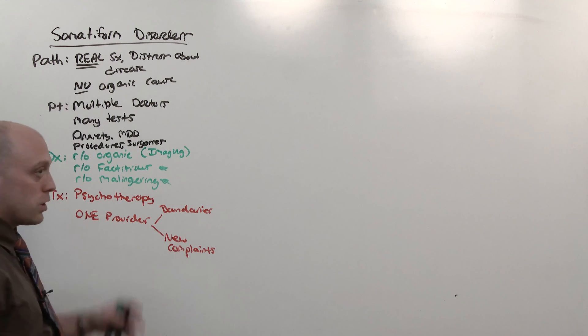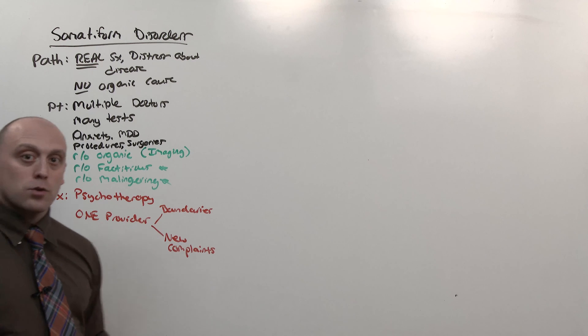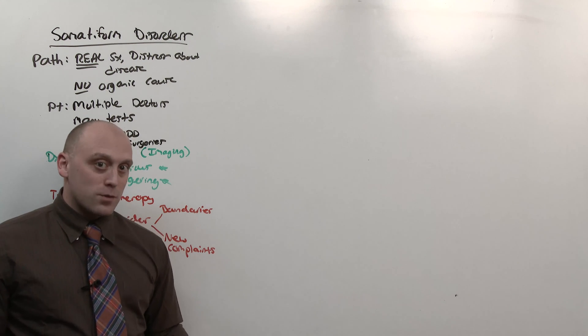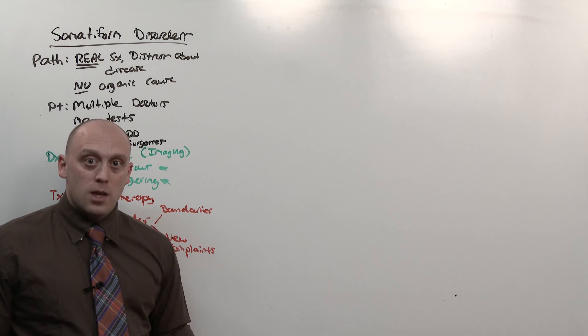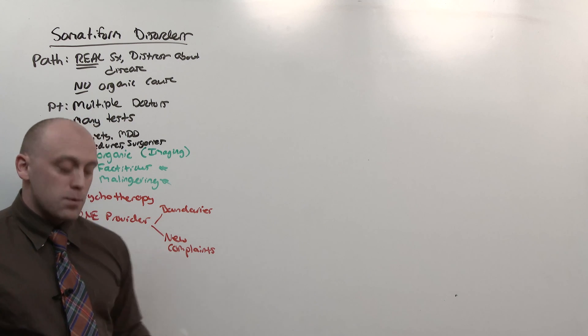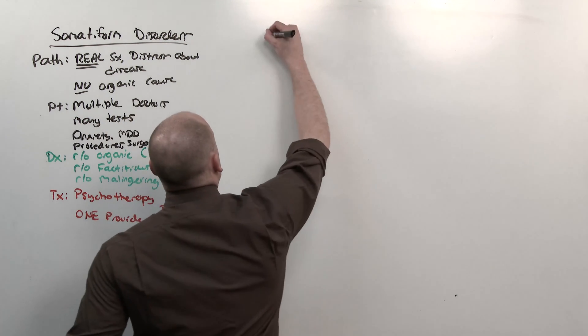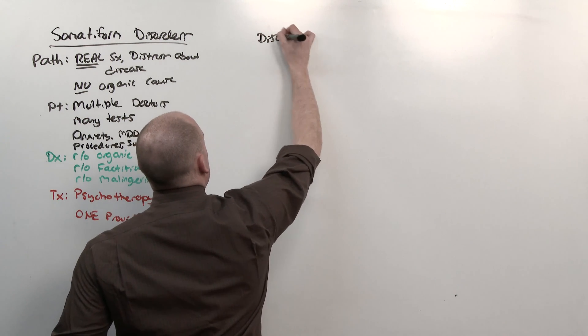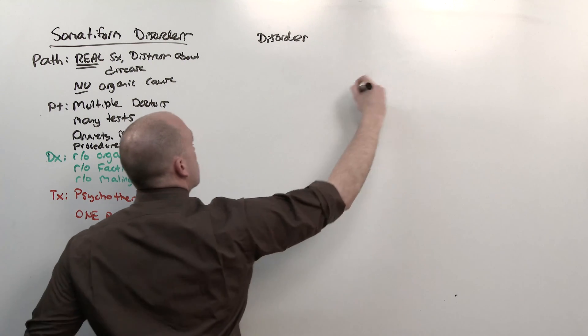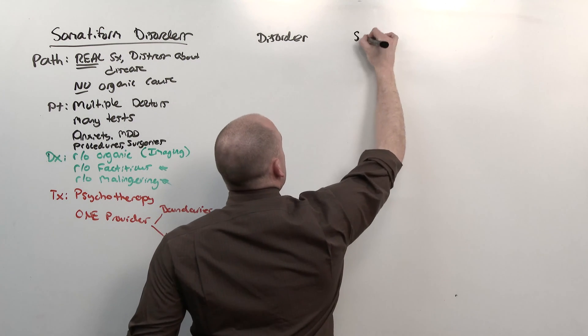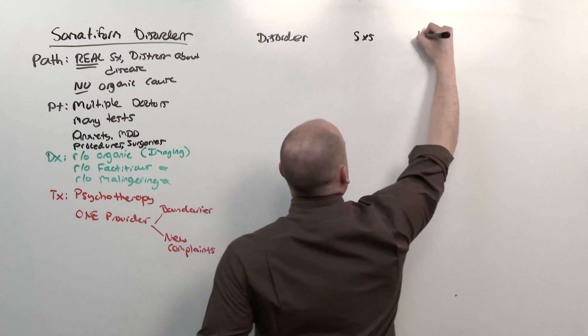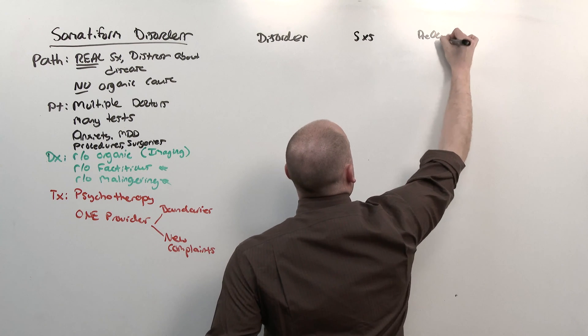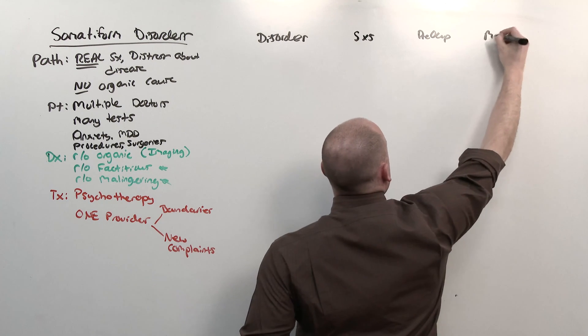So this is somatoform disorder in general, what I want to do now is break it down according to the three different somatoform disorders you need to know, and then compare them to factitious and malingering. We're going to do this based on the name of the disorder, and I'm going to use abbreviations here. They're spelled out in your notes. What symptoms the patient might have, what the preoccupation is, and what their motivation is.